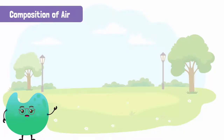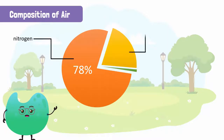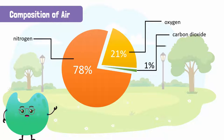Nitrogen makes up approximately 78% of the air around us. Oxygen makes up 21%, and the remaining 1% contains other gases such as carbon dioxide, helium, water vapour, and rare gases. In this lesson, we will learn about the properties and uses of these gases in our lives.